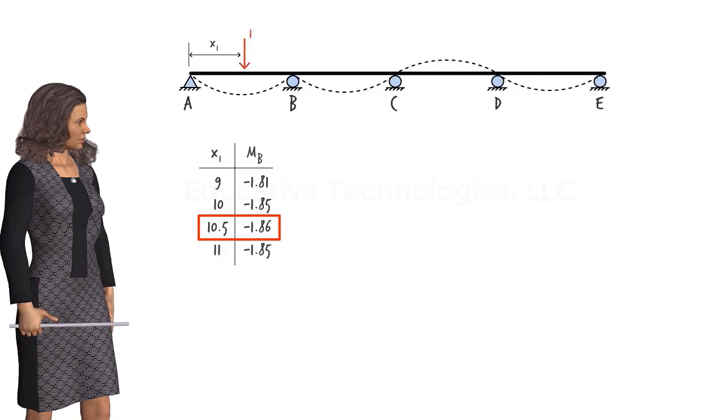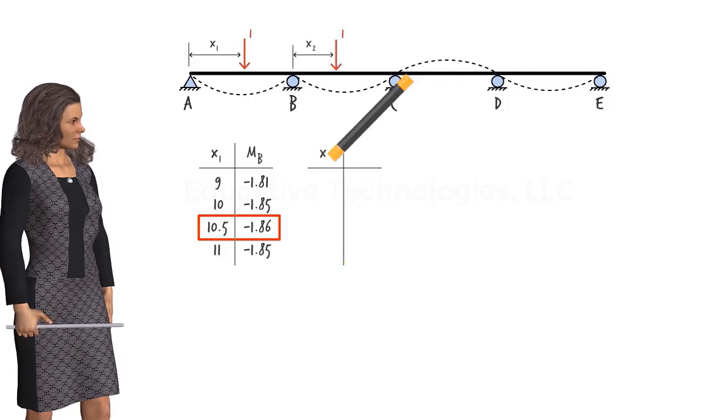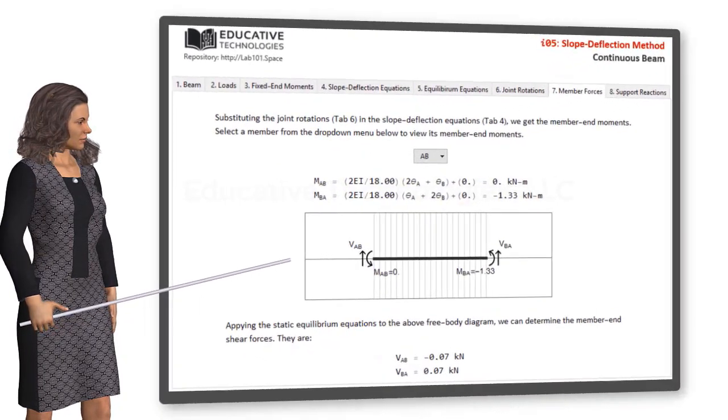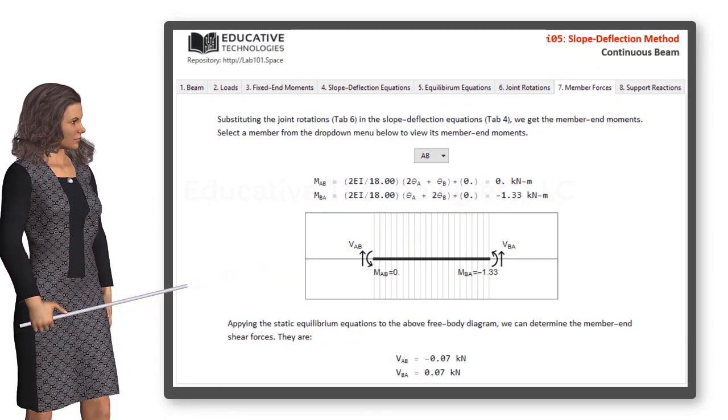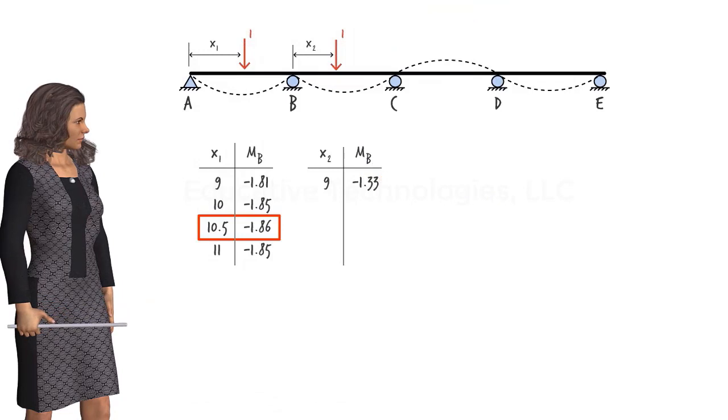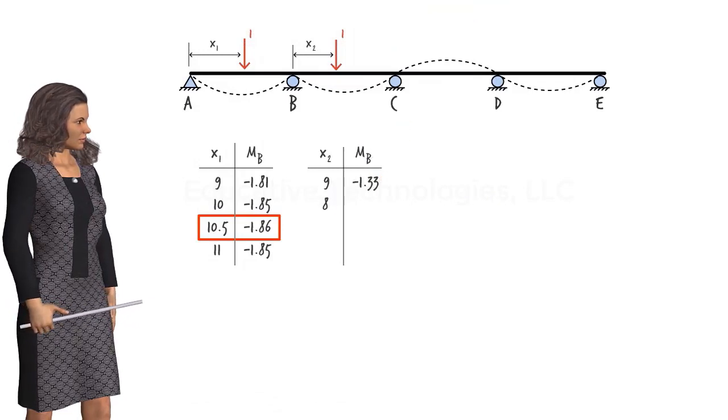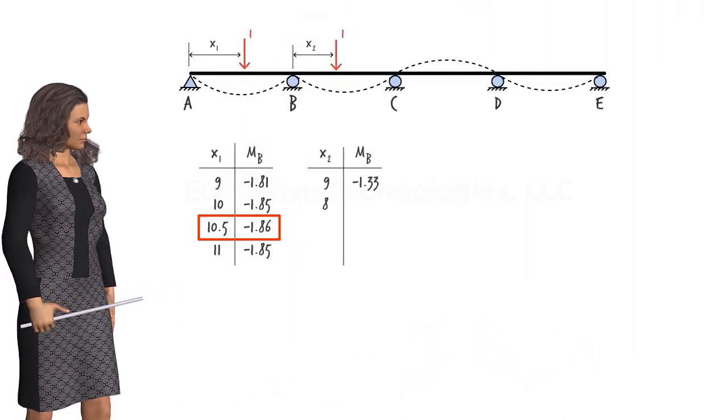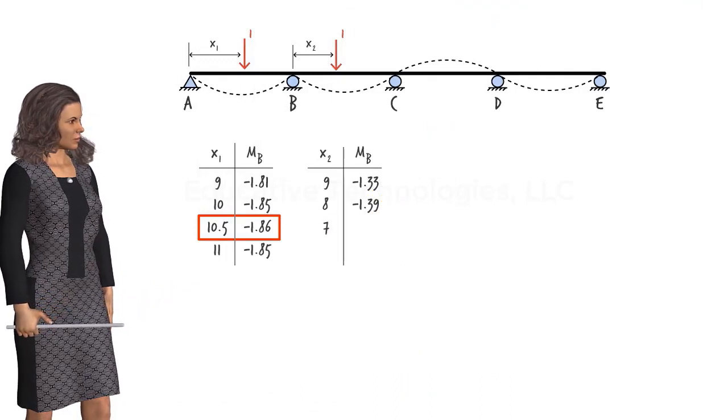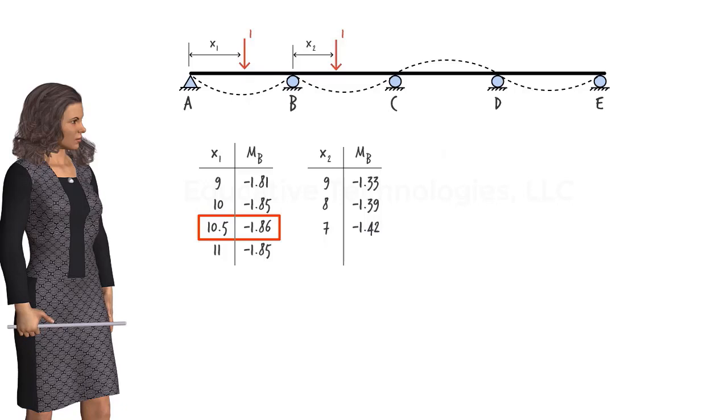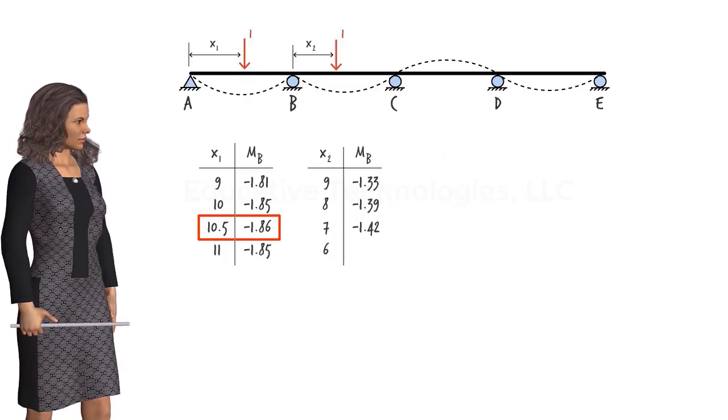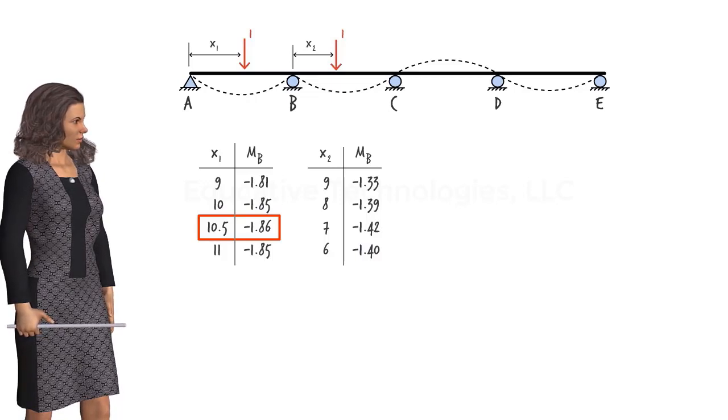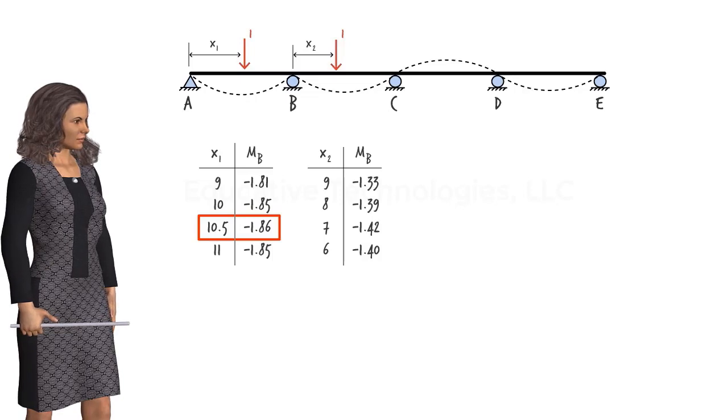We can repeat this process for segment BC in order to determine x2. If we place a unit load at the midpoint of the segment, the moment value at B becomes negative 1.33. If the unit load is moved to the left by 1 meter, the moment value at B becomes negative 1.39. At x equals 7, the moment value at B is negative 1.42. At x equals 6, we get negative 1.4.